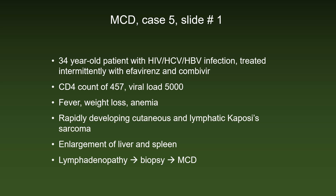Finally, the last patient in this video was a 34-year-old with HIV, HCV, and HPV infection, treated intermittently with efavirenz and Combivir. His CD4 count was 457 and his viral load 5000. He had fever, weight loss, and anemia, with rapidly developing cutaneous and lymphatic Kaposi's sarcoma, enlargement of liver and spleen. One of the lymph nodes was biopsied and the biopsy yielded multicentric Castleman's disease.